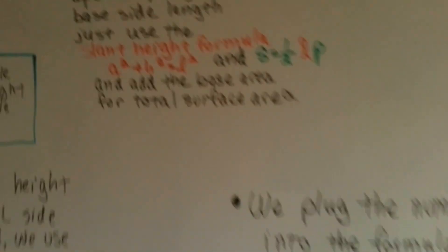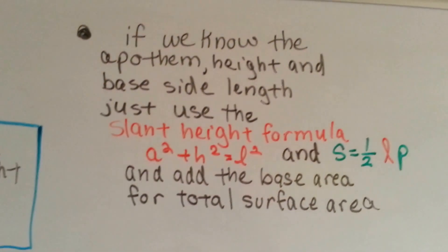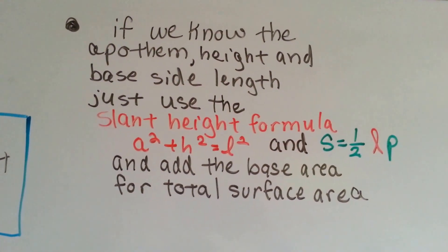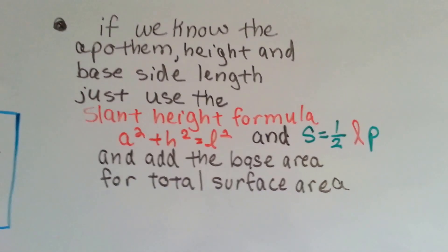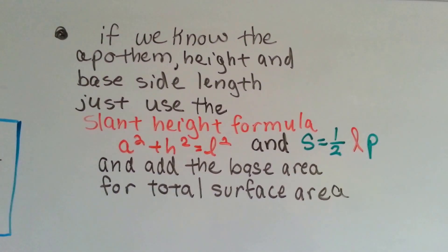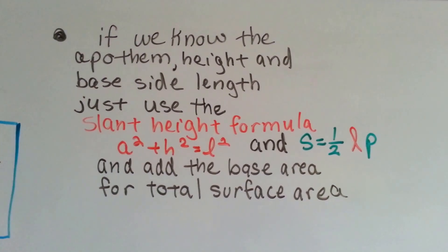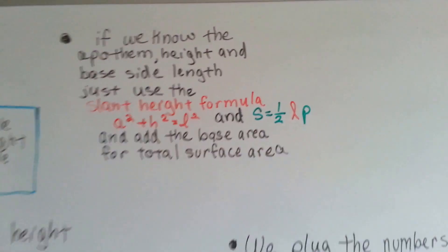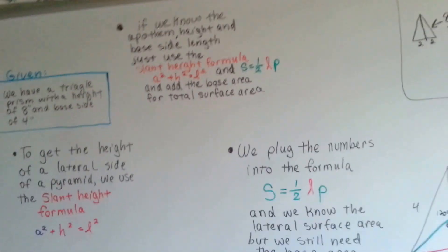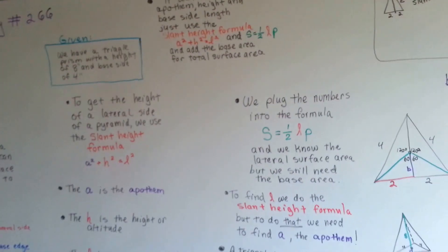Now, the sad thing is, if we knew the apothem, the height, the base side length, we could have just done the formulas and had the area right away. It's not having the apothem that really screws it up for us or one of the other pieces of information. Either way, that is how you get the total surface area of a triangle pyramid.